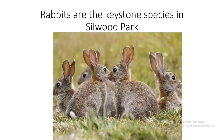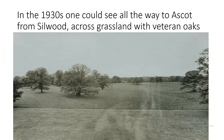The most important thing to understand about the ecology of Silwood is the vital role that rabbits have played as the keystone species. This black and white photograph is the view from the front of Silwood that appeared in the estate agent's brochure the last time Silwood Park was sold as a private residence in the 1930s. In 1930 you could see from the manor house all the way to Ascot — about two kilometers — studded with beautiful veteran oaks.